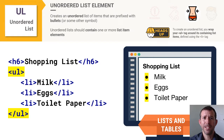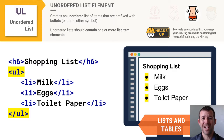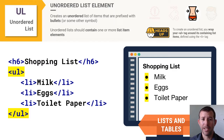If you want to create an unordered list — say, a shopping list — you would use UL. The UL element must wrap one or more LI elements. In this case I have three list items: milk, eggs, and toilet paper. Since I've chosen an unordered list, all items are prefixed by a bullet instead of a number.